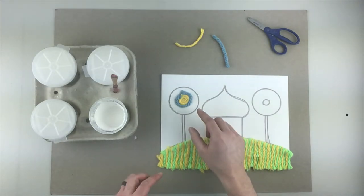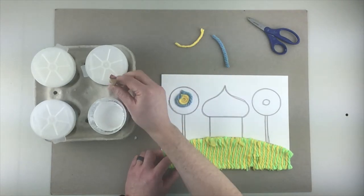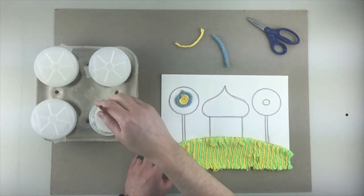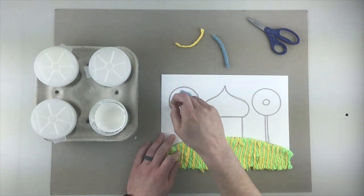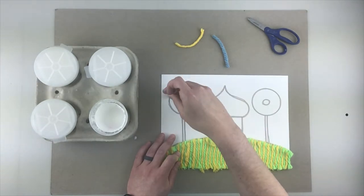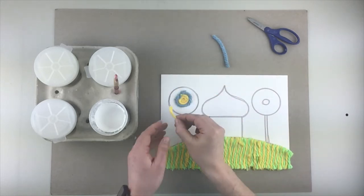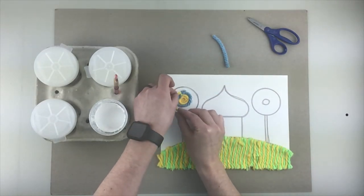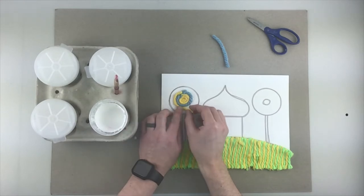And you're going to just keep alternating. So I did yellow, I did blue, now I'm back to doing yellow. Start where you left off, work your way around.